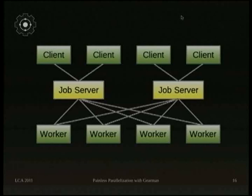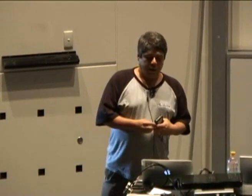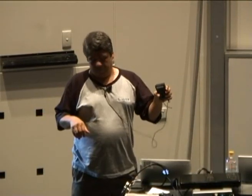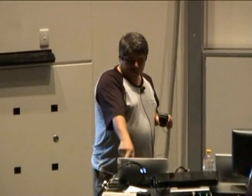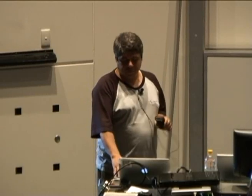How does it work? You have a broker, which is the job server, and you set up n number of these — it's recommended you have at least two. Clients connect to any of the job servers, and workers connect to all the job servers. So if one job server goes down, the worker fetches jobs from the other job server. It's important to note that the job servers themselves are not communicating with each other.